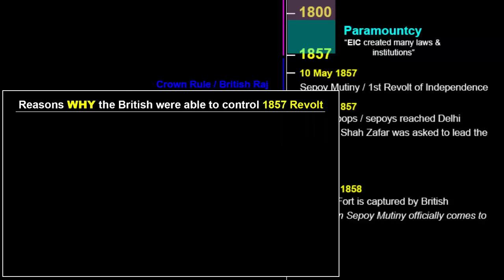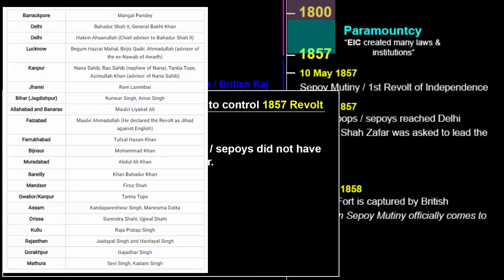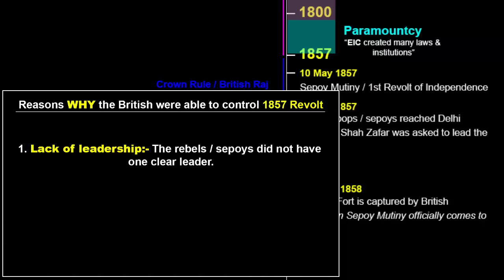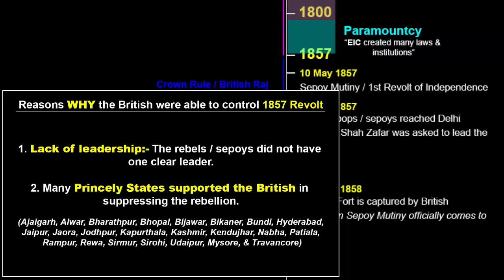The British were able to control the revolt for two main reasons. First, the sepoys did not have one clear leader — with so many leaders, it was difficult to formulate a single plan, resulting in an overall lack of leadership. Second, many princely states supported the British side by providing soldiers as backup — 21 princely states in total. Many of these states saw the revolt as a restoration attempt of Mughal rule, having previously suffered under the Mughal dynasty before the British arrived.